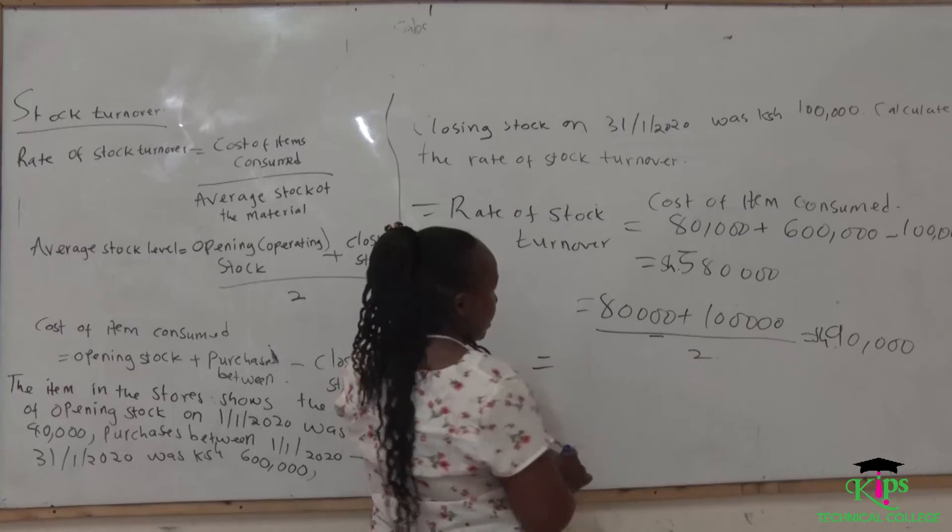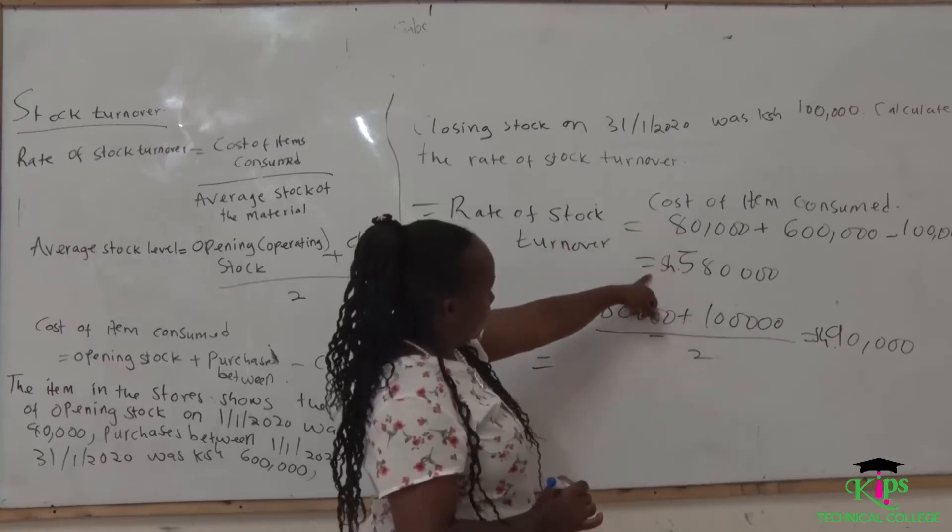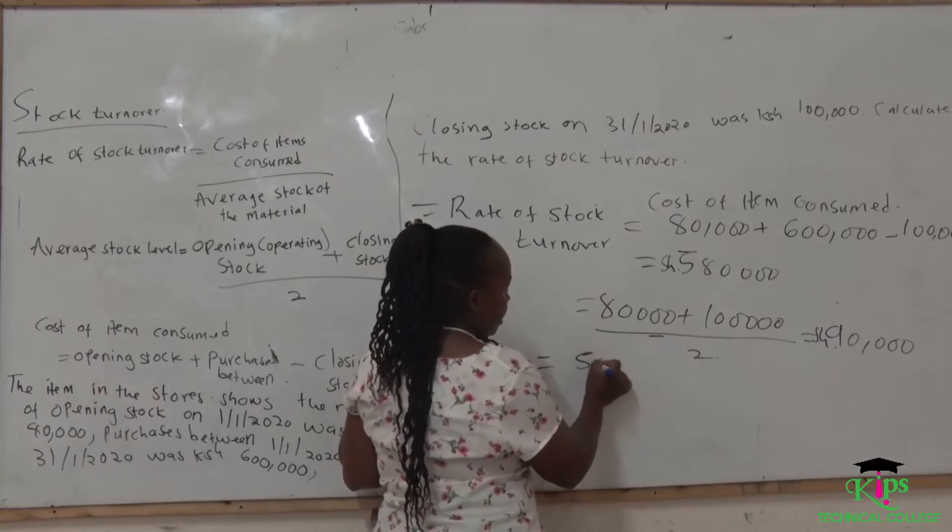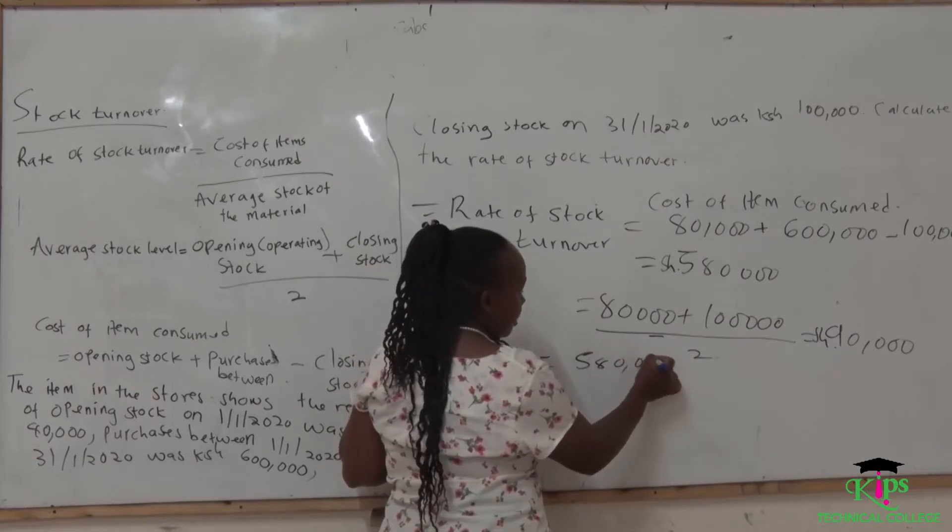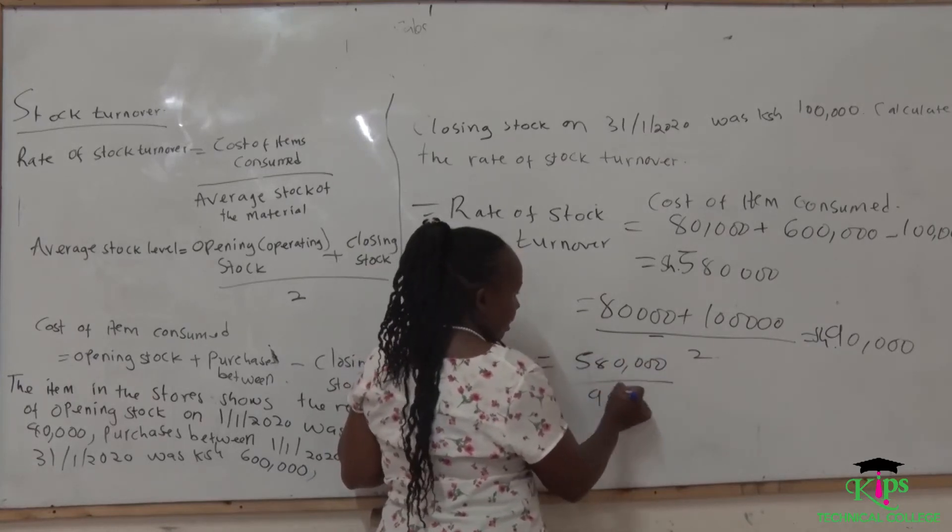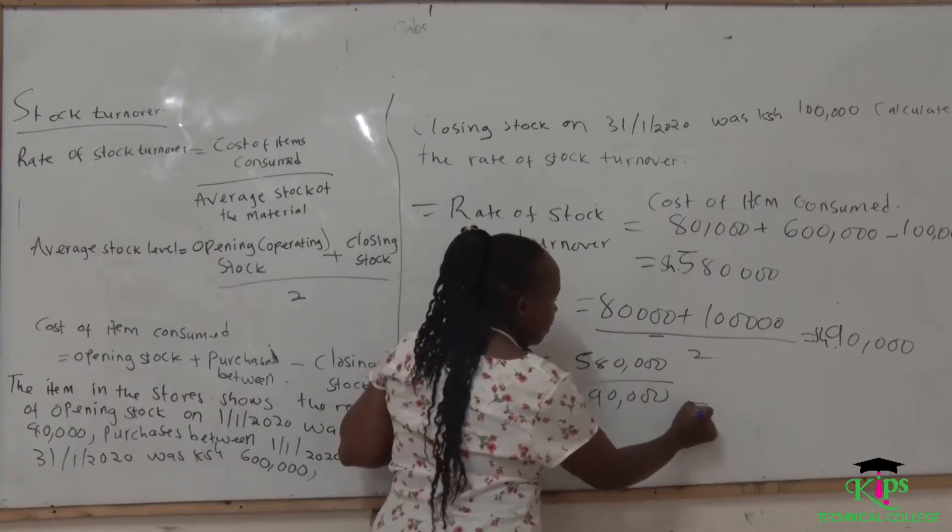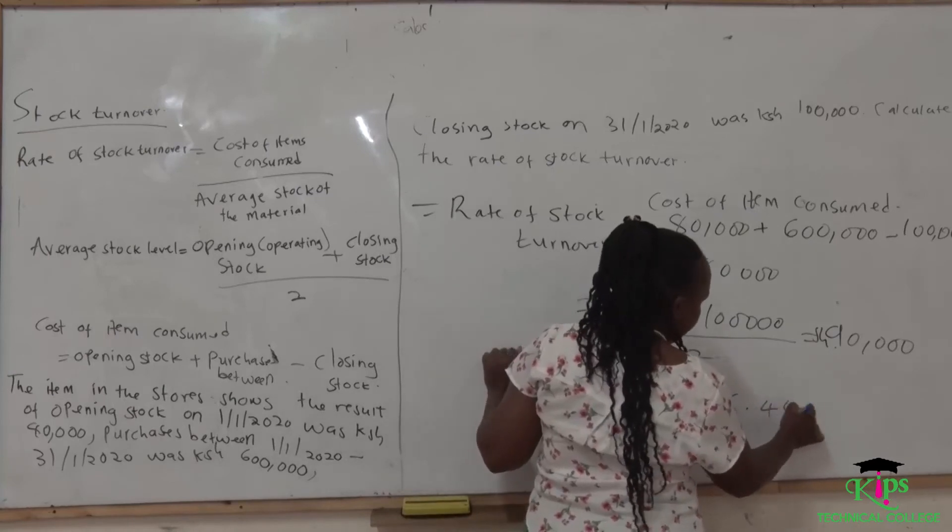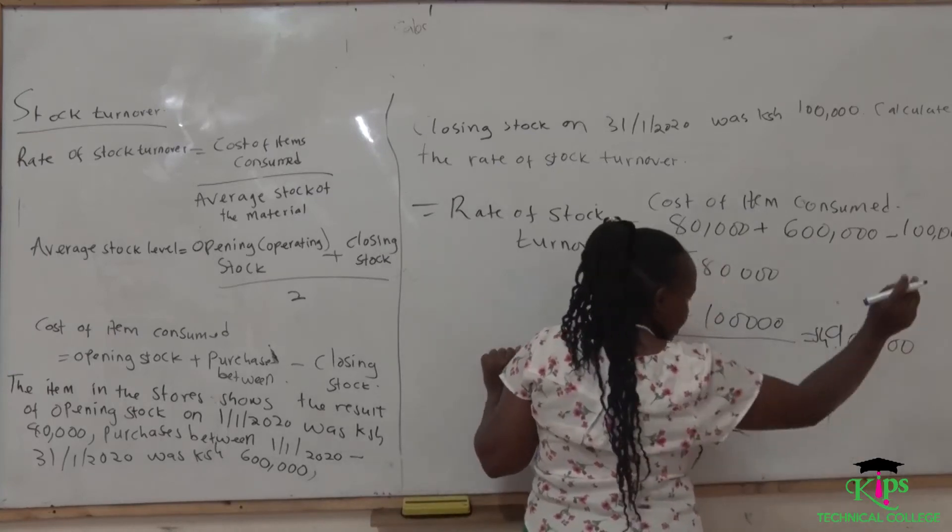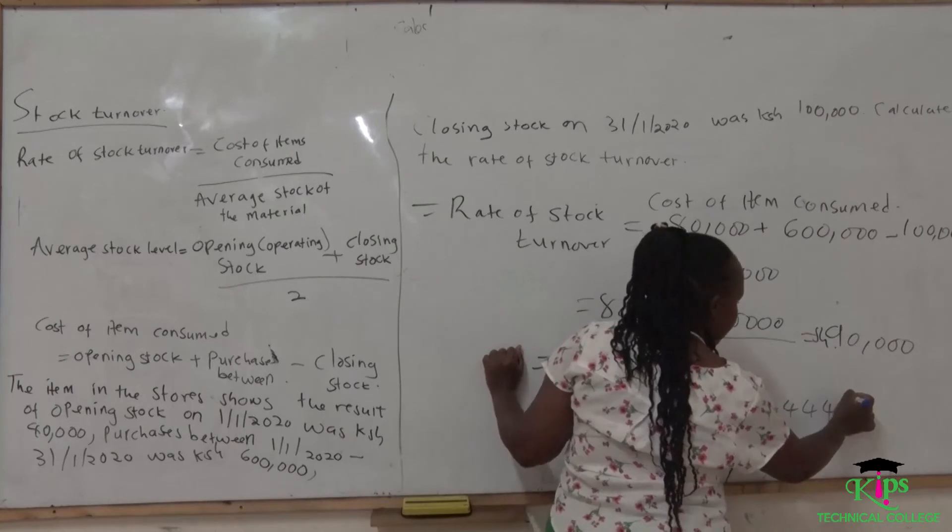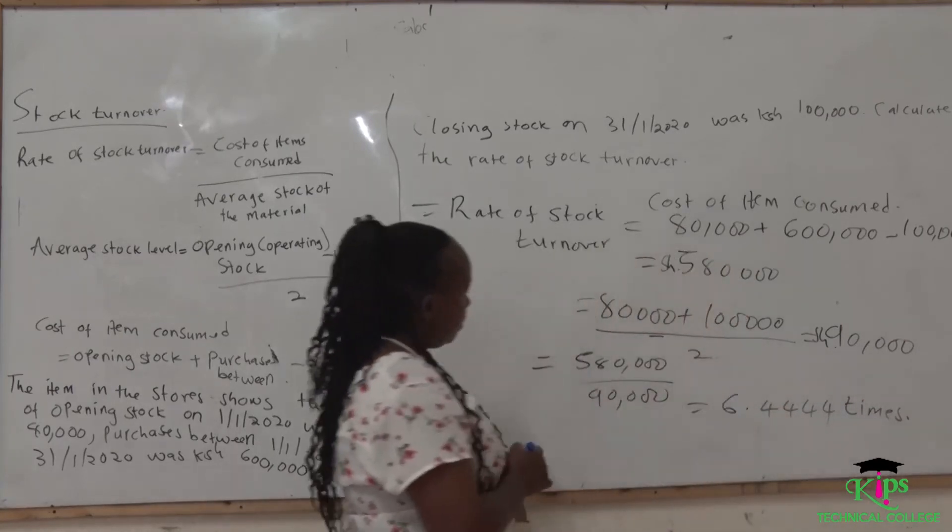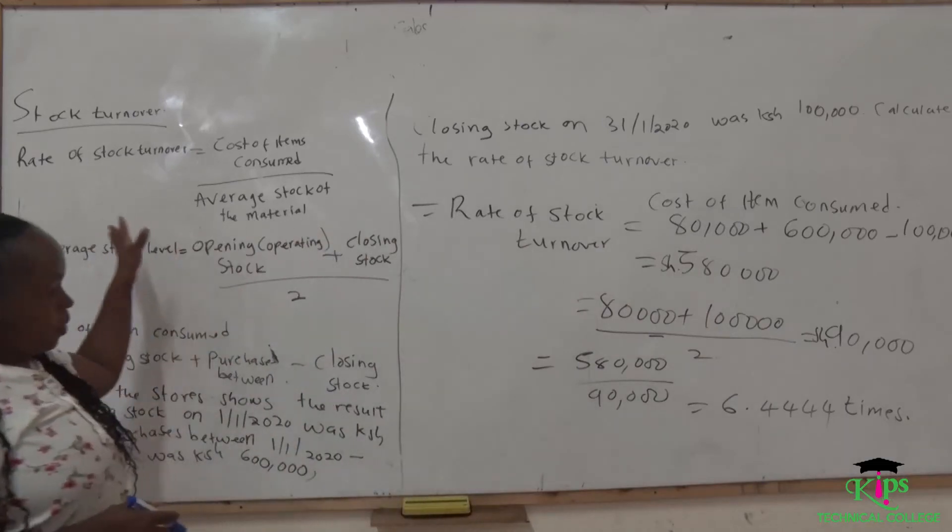Our rate of stock turnover will be the cost of item consumed divided by average stock level. The cost of items consumed is $580,000 divided by $90,000. When you divide, you are going to get 6.444 times. So this is the formula of getting the rate of stock turnover.